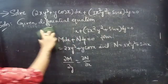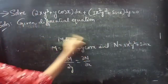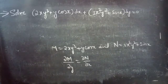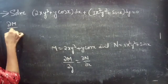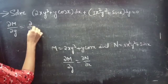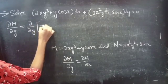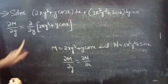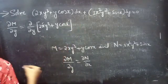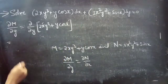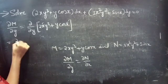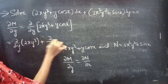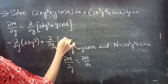Firstly, we will find the partial derivative of M with respect to y. ∂M/∂y equals to ∂/∂y of (2xy³ + y cos x). Since we are doing the partial derivative with respect to y, x is considered as constant.